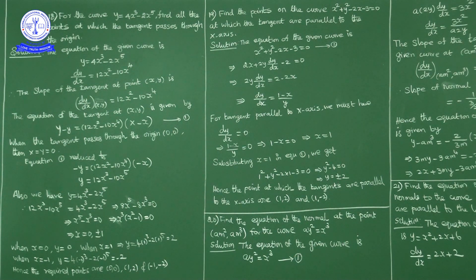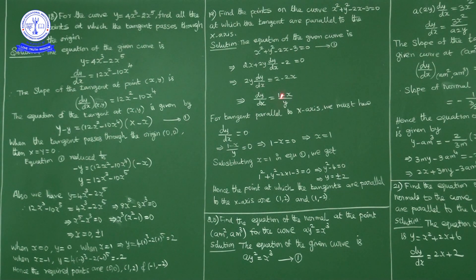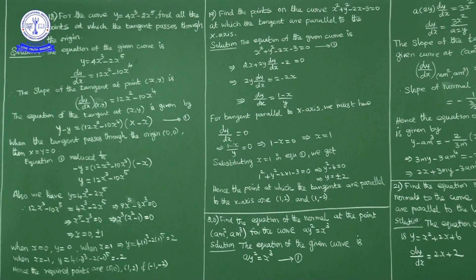Hence, the points at which tangents are parallel to the x-axis are (1, 2) and (1, -2). At these two points the tangents are parallel to the x-axis.